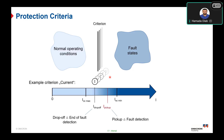We have different criteria that can be taken into consideration. The current is the most traditional protection criteria to monitor the RMS value, such as with non-directional overcurrent protection. The voltage criteria can be applied for protection functions such as overvoltage and undervoltage protection.